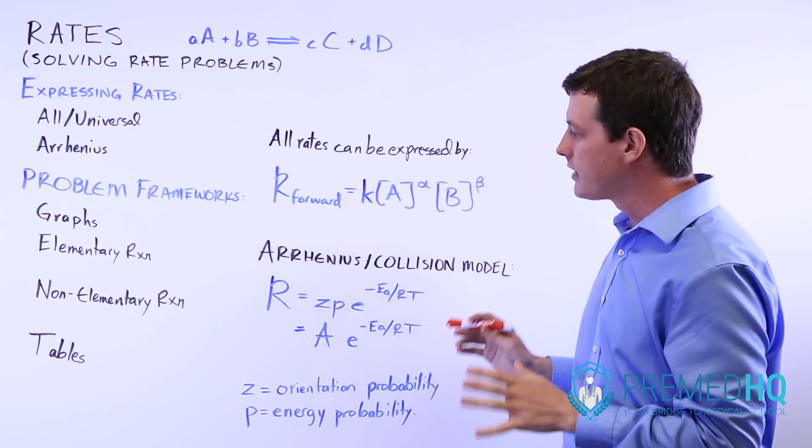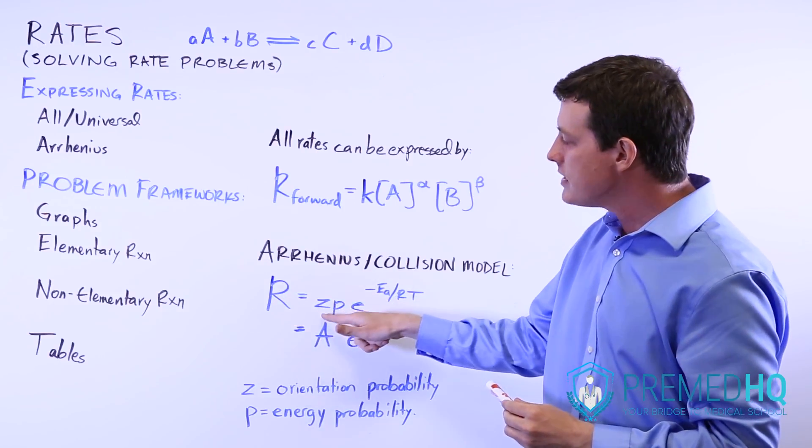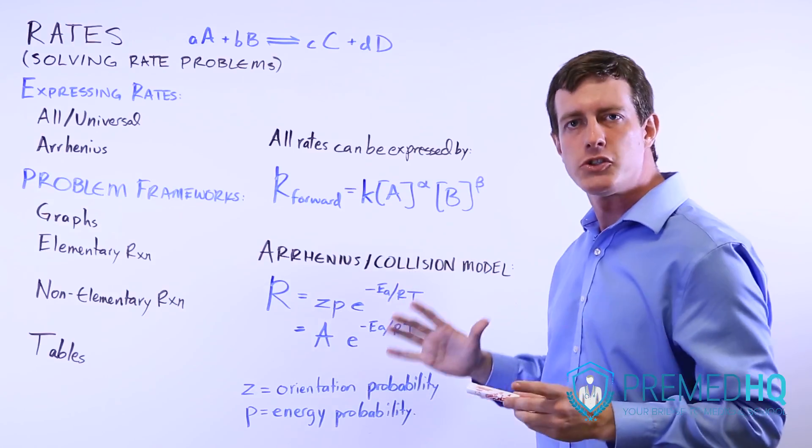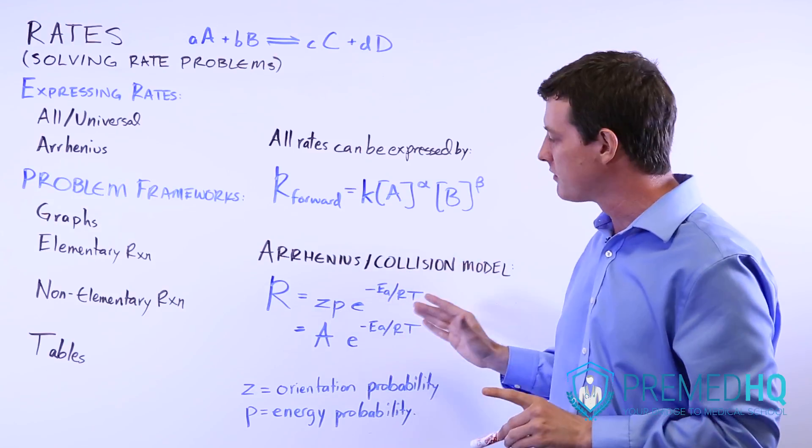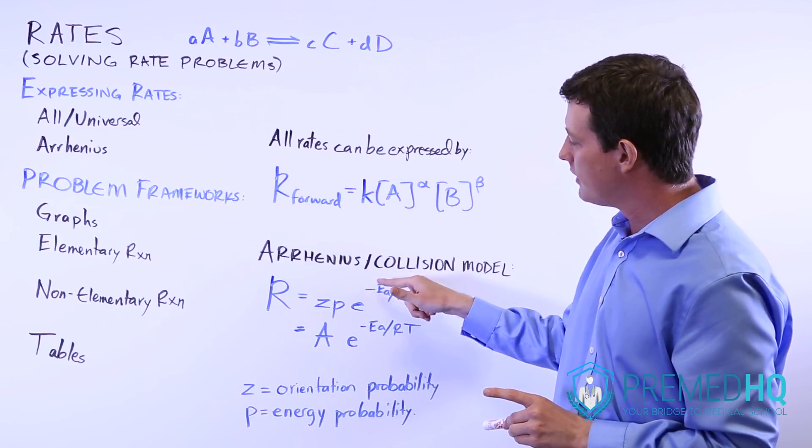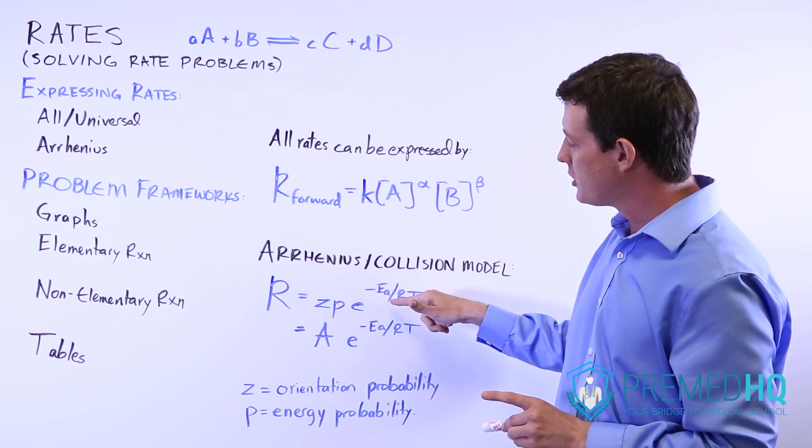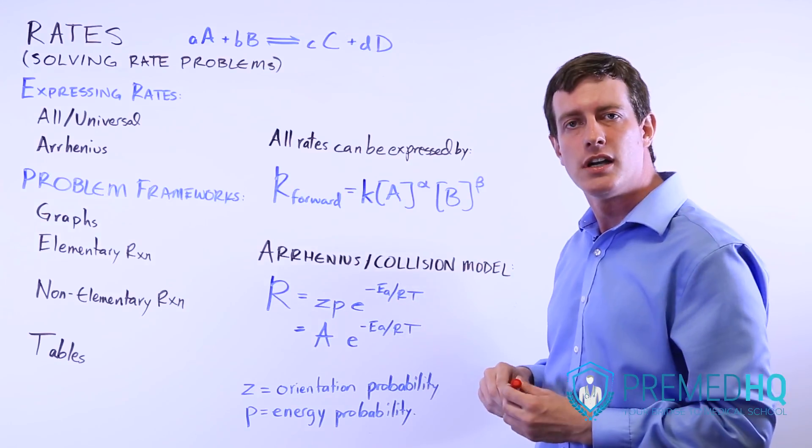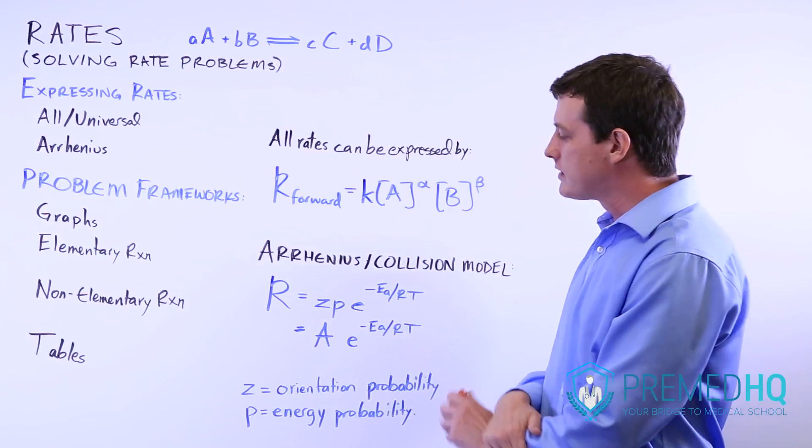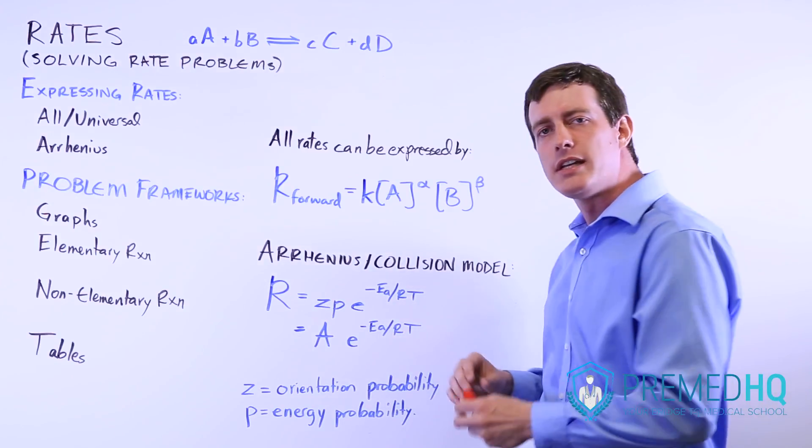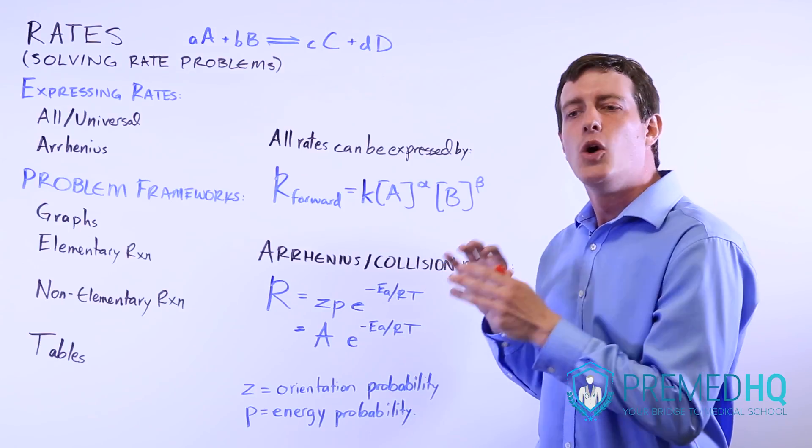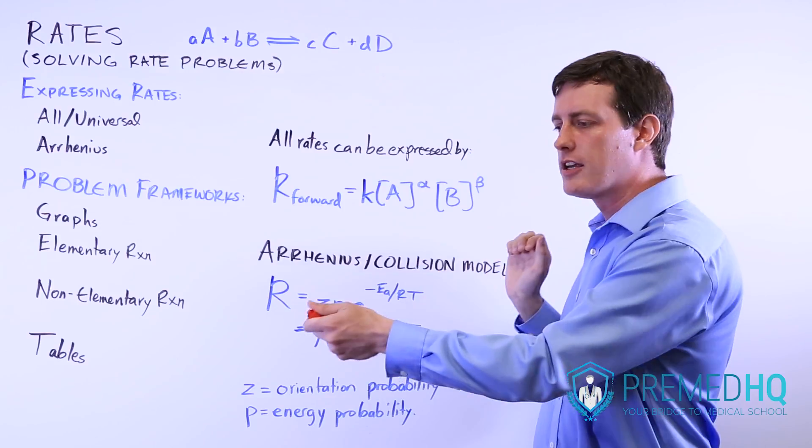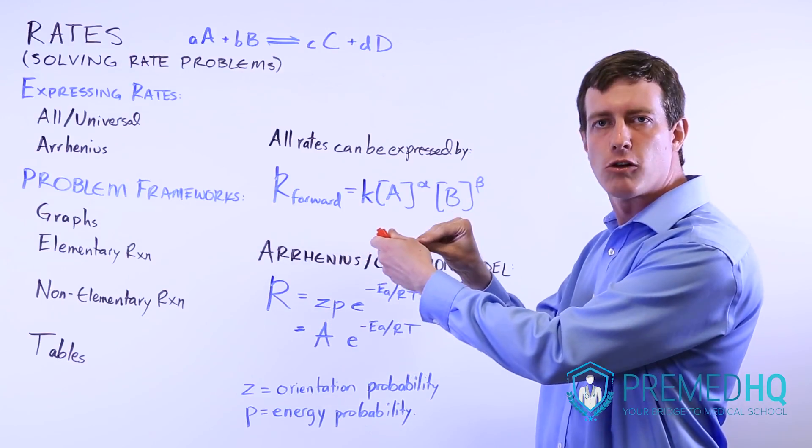Arrhenius came up with the formula that you can express the rate as Z times P times e, which is Euler's constant—it's around 2.7, but you won't be responsible for that—raised to the power of the negative activation energy divided by R, the gas constant, and T, the temperature in Kelvin. Z is the probability that these two molecules or atoms will be in the right orientation such that a reaction could occur. When they're colliding, they have to be colliding in the correct orientation.